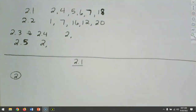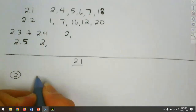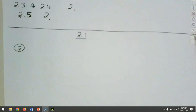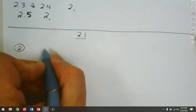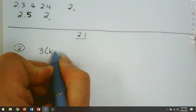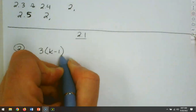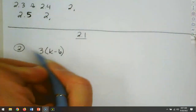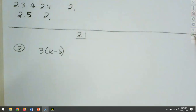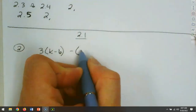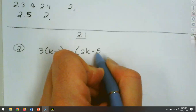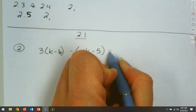For question 2, we're going to have to use our distributive property. What we've got is 3 times the quantity k minus 6, minus the quantity 2k minus 5, equals 7.